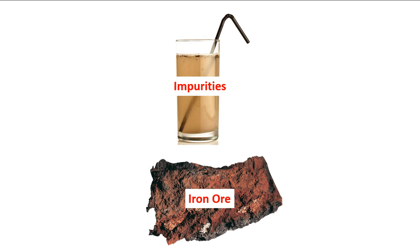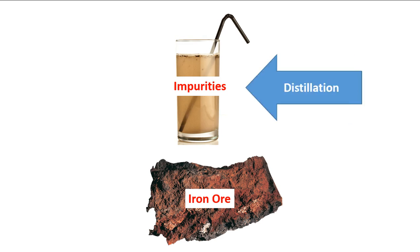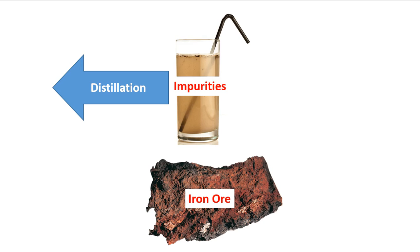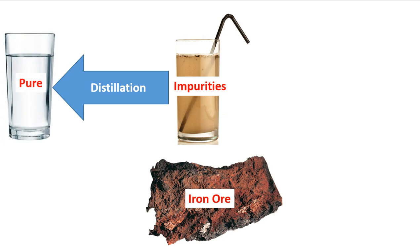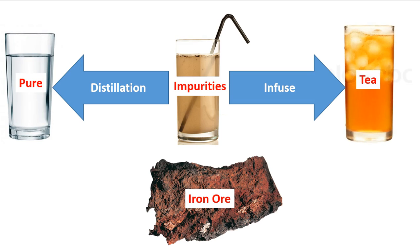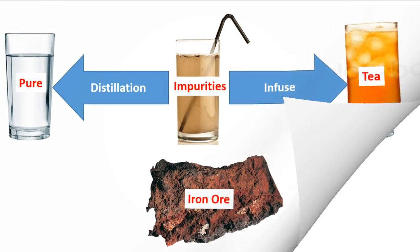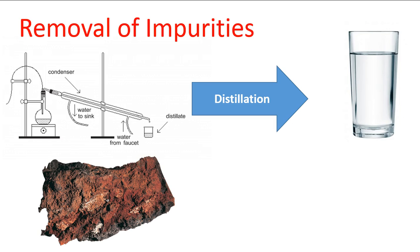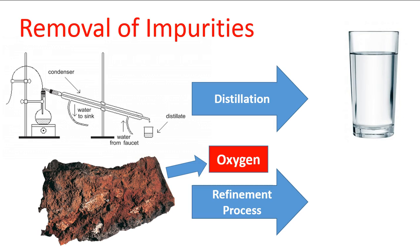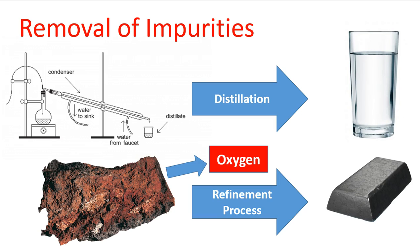They both have a lot of impurities, but they can both be brought into a state where they are very useful. The analogy here is that the process of getting water to a useful state for drinking is similar — analogous — to getting iron to a useful state. First is the idea of removing the impurities from water through some sort of filtration or distillation process, and similarly, through a refining process you can remove oxygen and end up with a useful type of iron.